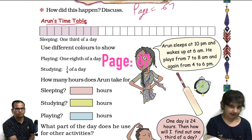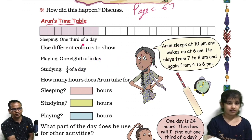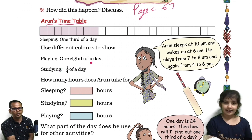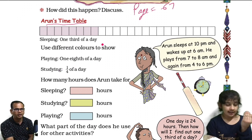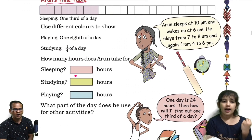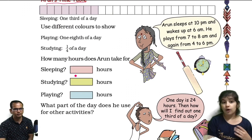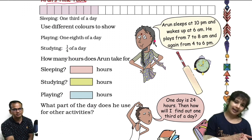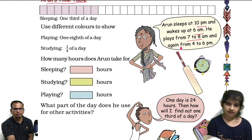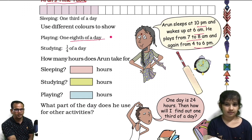Okay, Arun's timetable: sleeping one third of a day, playing one eighth of a day, and studying one fourth of a day. I'll use different colors to show each. How many hours does Arun take for sleeping and studying? Arun sleeps at 10 PM and wakes up at 6 AM. He plays from 7 to 8 AM and again from 4 to 6 PM.